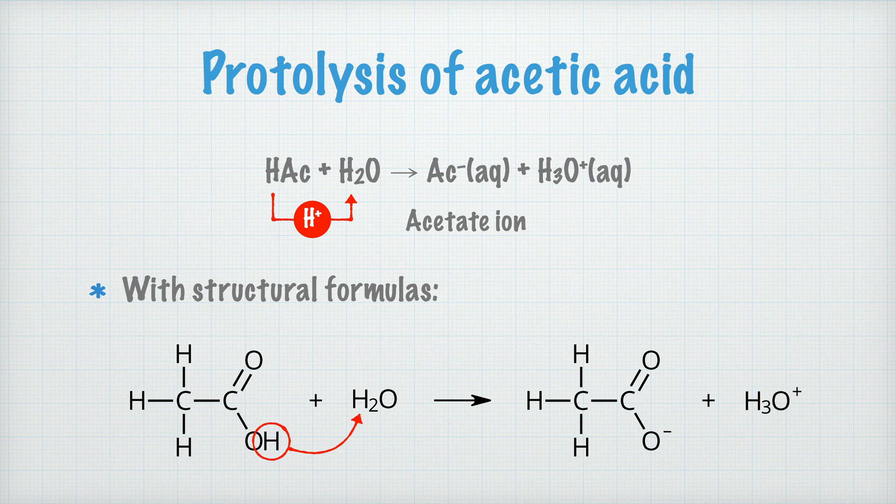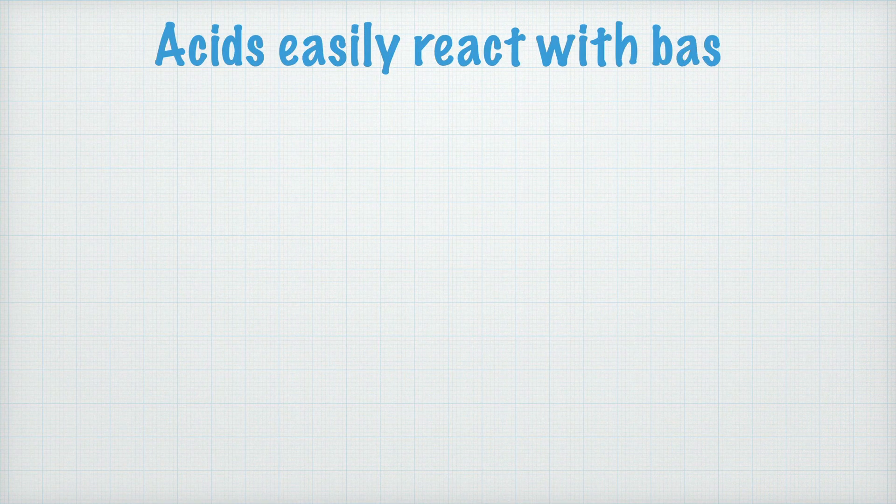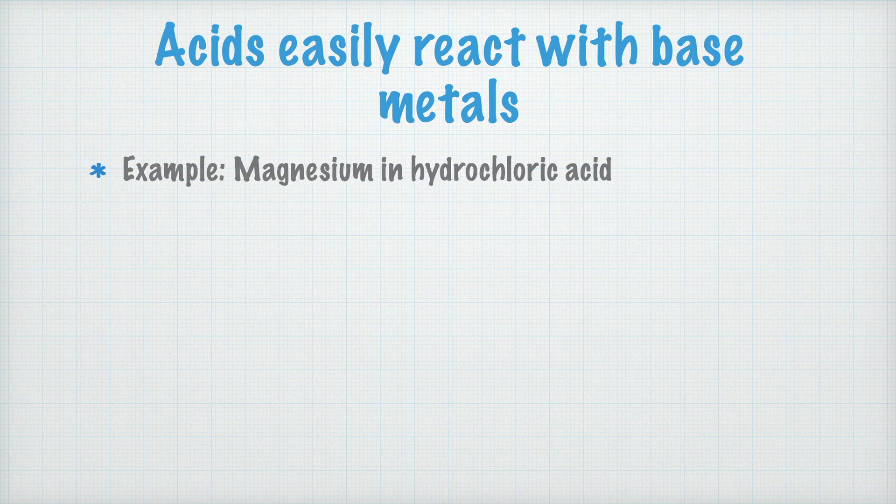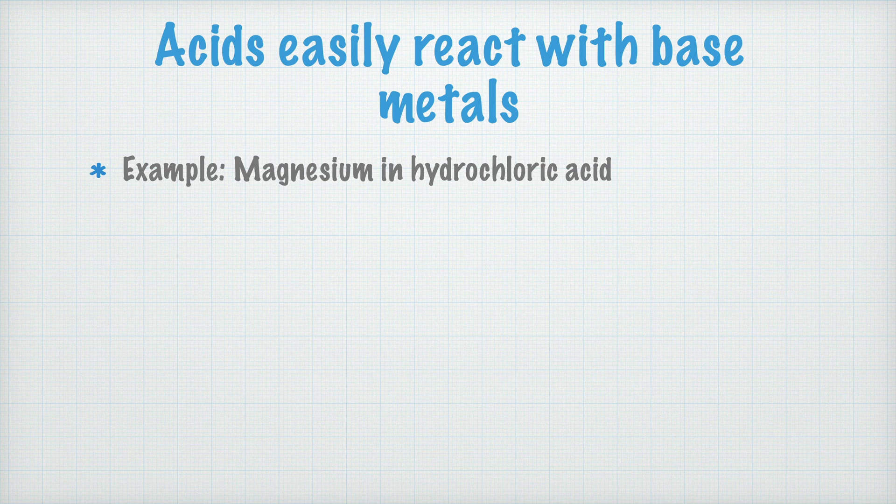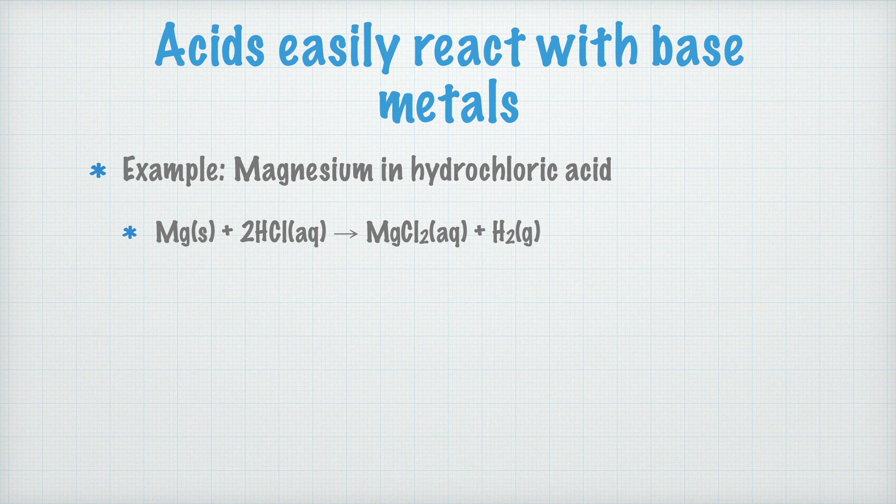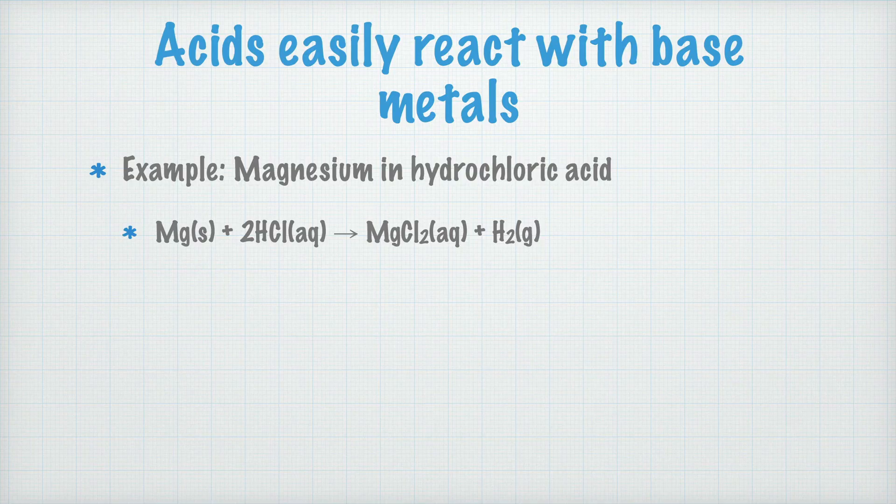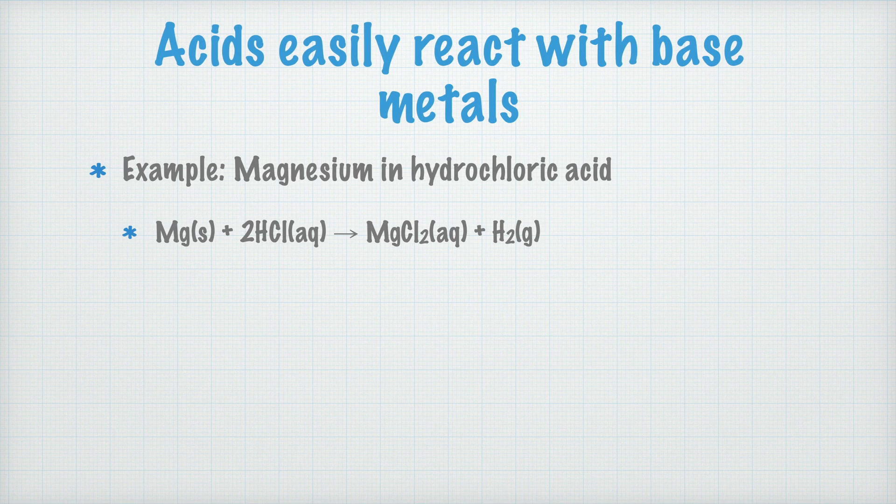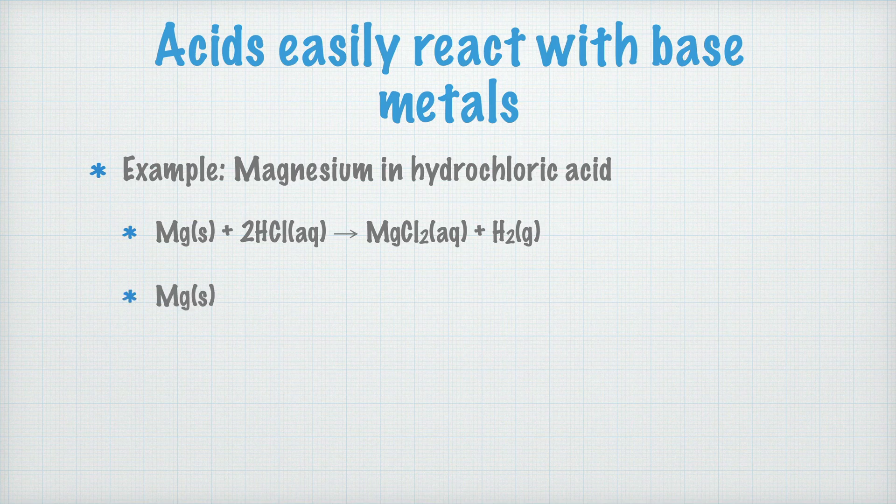The last property of acids that I want to mention here is that acids react with base metals. One example of this is how magnesium reacts with hydrochloric acid. Maybe you don't examine this in the kitchen at home, but in the lab, it's a real classic. What happens is that solid magnesium reacts with the hydrochloric acid to produce magnesium chloride dissolved in water, plus hydrogen gas. To make it even clearer what happens, we can write it like this instead. The hydrochloric acid can, as I said, be said to consist of a hydrogen ion and a chloride ion. Because of this, we can separate them from each other so that the solid magnesium reacts with two hydrogen ions and two chloride ions in solution.